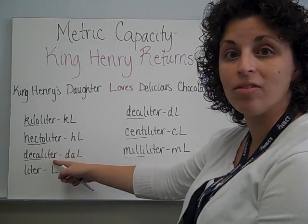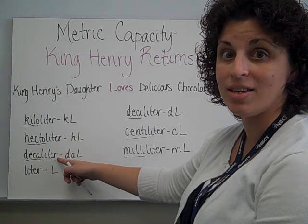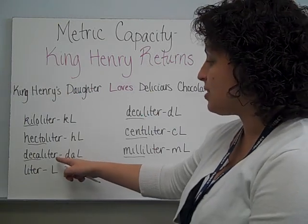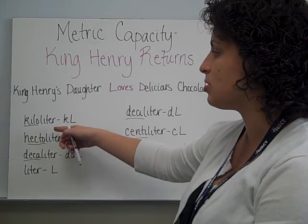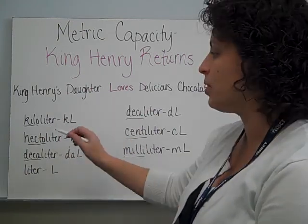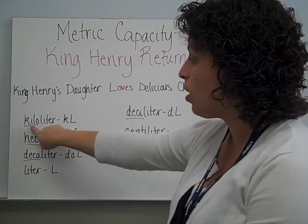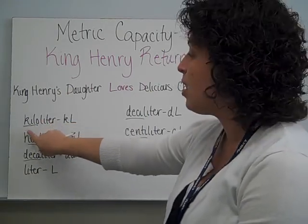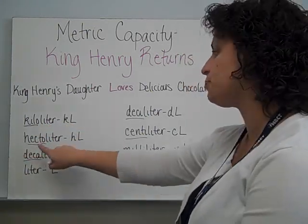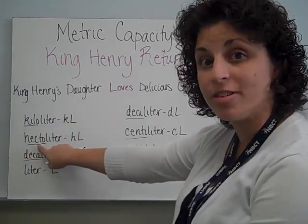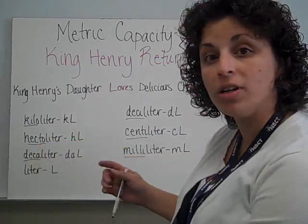Decaliters — it takes ten liters to make one decaliter. It takes ten decaliters to make a hectaliter, and ten hectaliters to make a kiloliter. Or we can use the prefix: kilo means 1,000, so a kiloliter is made from 1,000 liters. A hectaliter is made from 100 liters.